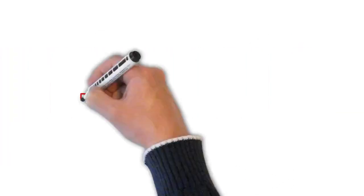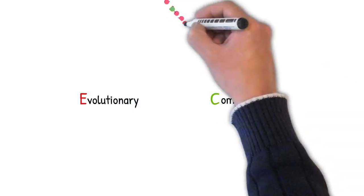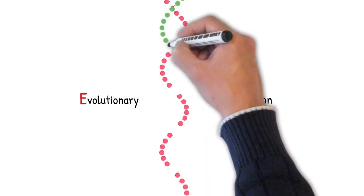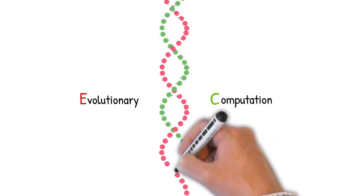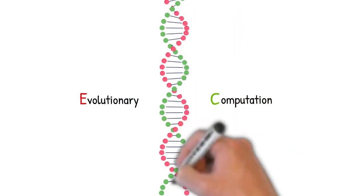But there is a way out of this. Evolutionary computation solves these problems by iteratively creating incrementally better solutions than bad ones over time. Let's take a look at this in more detail.